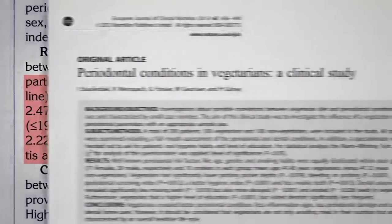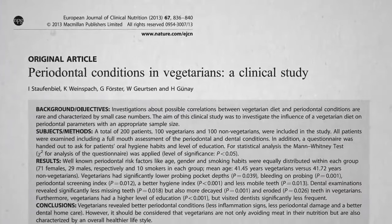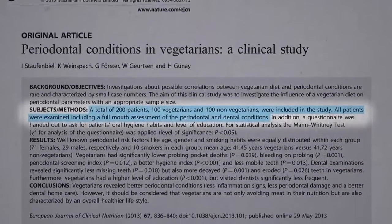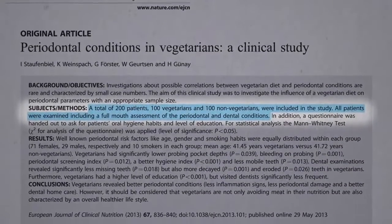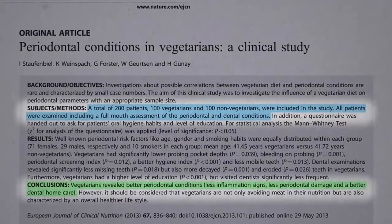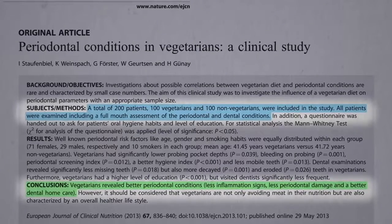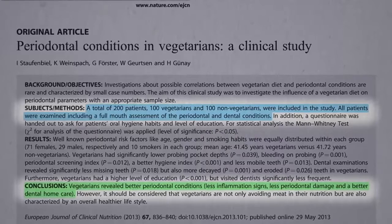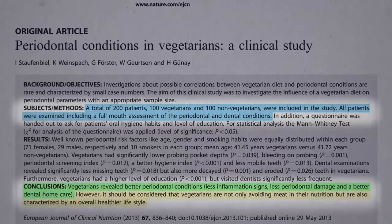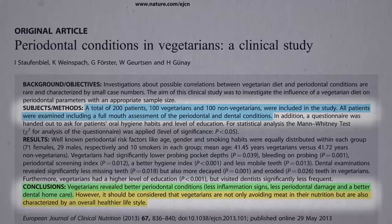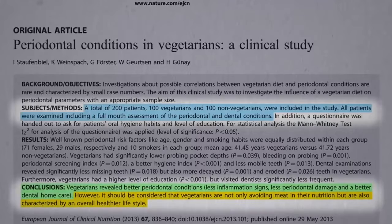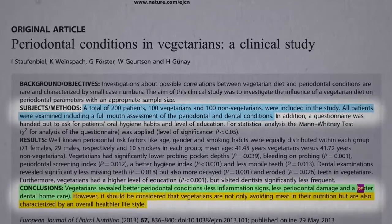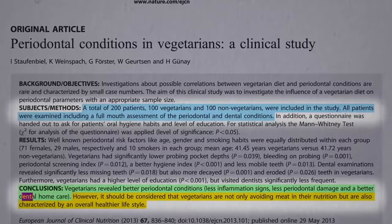What about periodontal conditions in vegetarians? A hundred vegetarians versus non-vegetarians were studied, and those eating vegetarian did have better periodontal conditions — less inflammation signs, less periodontal damage, and better dental home care. However, it should be considered that vegetarians may not just be avoiding meat, but are healthier in other ways, like better dental home care.